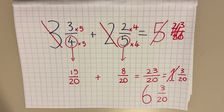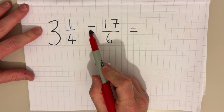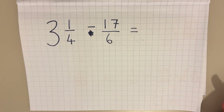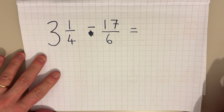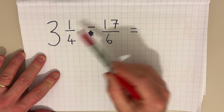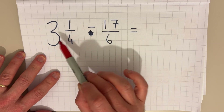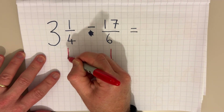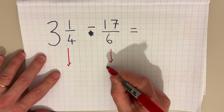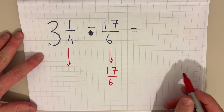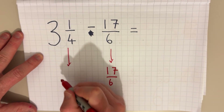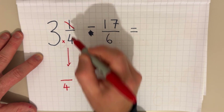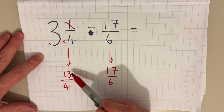In the final question we have a subtraction: three whole ones and one quarter take away seventeen sixths. Because I have an improper fraction and a mixed number, I have to change them both into improper fractions. Seventeen sixths is already an improper fraction so it stays as seventeen sixths. To change three and a quarter into an improper fraction, I use the four: three times four is twelve, add one makes thirteen — so that's thirteen quarters.